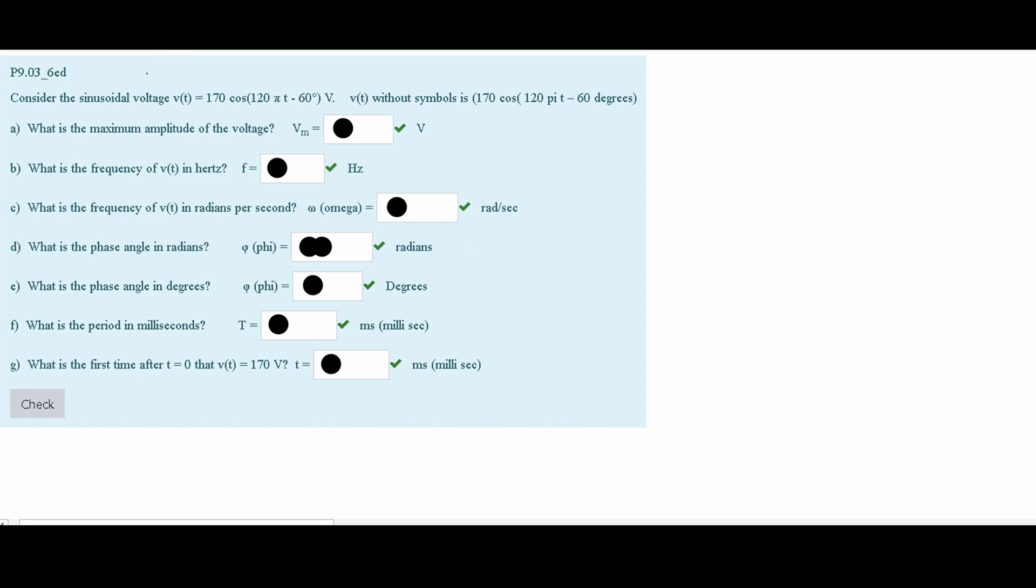In this problem, we are told to consider the sinusoidal voltage Vt equals 170 times the cosine of 120πt minus 60 degrees, this is in volts. We are told to find A, B, C, D, E, F, and G, which are different questions regarding this sinusoidal voltage.